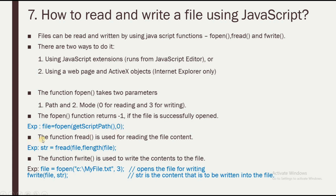The fRead function is used for reading file content: str = fRead(file, fLen). The fWrite function is used to write contents to a file. To write, you open the file with fOpen and then use fWrite, where 'str' is the content to be written to the file.